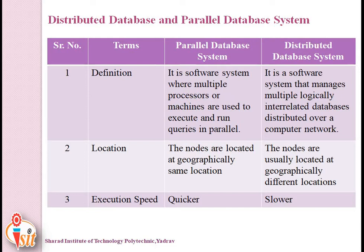A parallel database system is a software system where multiple processes or machines are used to execute and run queries in parallel. A distributed database system is a software system that manages multiple logically interrelated databases distributed over a computer network. Regarding location, the nodes in the parallel database system are located at the same location, whereas the nodes in the distributed database system are located at different locations.